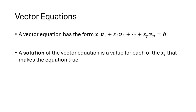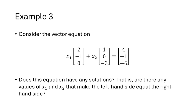A vector equation has the form x1*v1 + x2*v2 + ... + xp*vp = b, where on the left-hand side we have a linear combination with variable weights, and on the right-hand side we have a vector b. A solution of this vector equation is a value for each of the variables that makes the equation true — that makes the left-hand side equal the right-hand side.